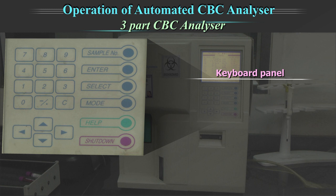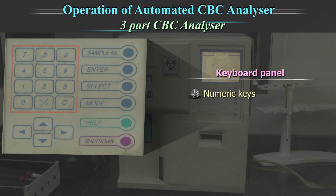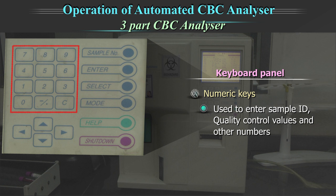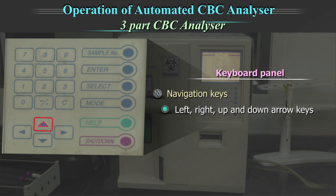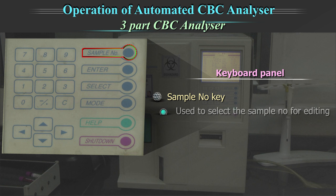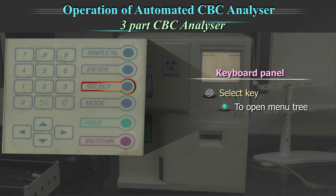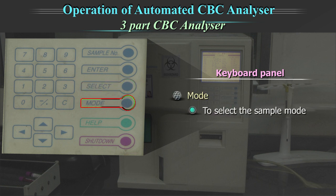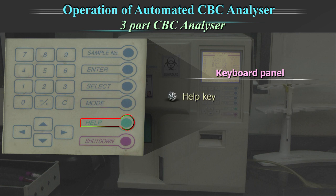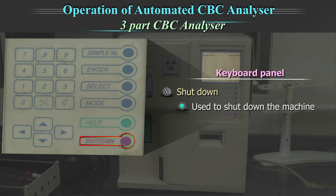The keyboard panel shows numeric keys, navigation keys and shortcut keys. Numeric keys are used to enter sample ID and quality control values. The navigation keys are used to navigate the equipment menu. The sample number key is used to select the sample number for editing. Enter is used to fix the selected menu. Select key helps you to open the menu tree for further options. Mode helps to select the sample mode — whole blood mode or pre-dilution mode. Help key is used when an error has occurred. Shutdown is used to shut down the machine.